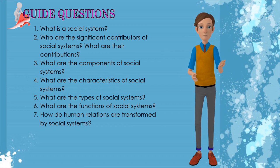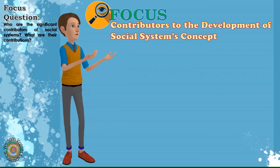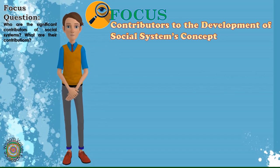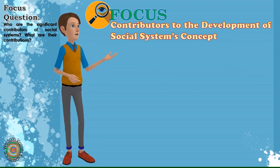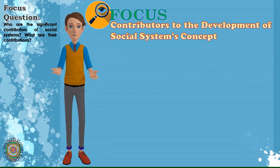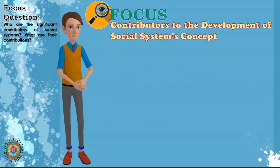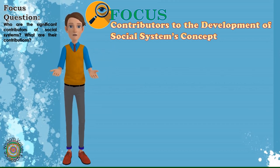Having presented you the guide questions, we are now ready to discuss the lesson. To start the discussion on social systems, let us familiarize ourselves with the major contributors. Though social systems have most likely existed for as long as humans have lived in groups, the concept first appeared as an academic theory in sociologist Talcott Parsons' book, The Structure of Social Action. Significant ideas contributed to the development of the social system from Parsons, Lumen, and Forrester.